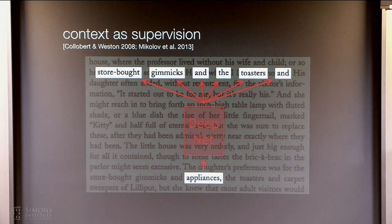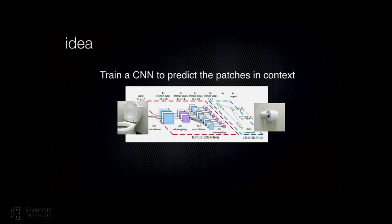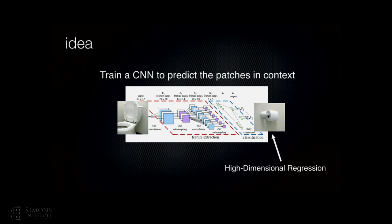Inspired by this, we thought we could also learn a deep network with the same idea. As a first try, given an image patch, we tried to predict what is on the left or right of that patch. For a toilet bowl, you want to predict there must be toilet paper on the left or right of it. But this didn't work because we are trying to predict pixels, and predicting pixels is a high-dimensional regression problem — networks we are learning from scratch are not good at predicting pixels initially.